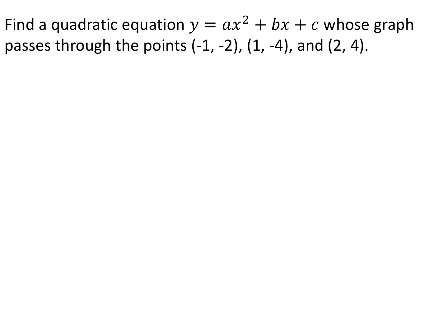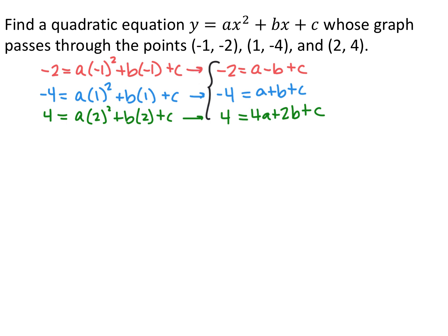We want a quadratic equation y equals ax squared plus bx plus c whose graph passes through the points negative 1, negative 2; 1, negative 4; and 2, 4. When a graph passes through points, those points make the equation true. So we plug in each point for x and y: plugging in negative 1 and negative 2 gives negative 2 equals a minus b plus c; plugging in 1 and negative 4 gives negative 4 equals a plus b plus c; and plugging in 2 and 4 gives 4 equals 4a plus 2b plus c. Now we have a system of three equations with three unknowns to solve for a, b, and c.